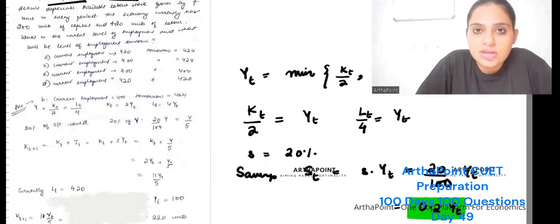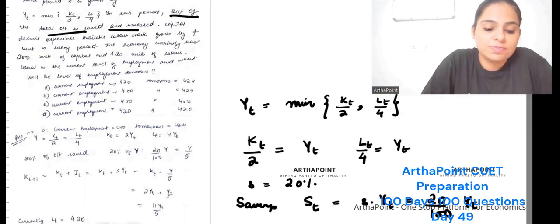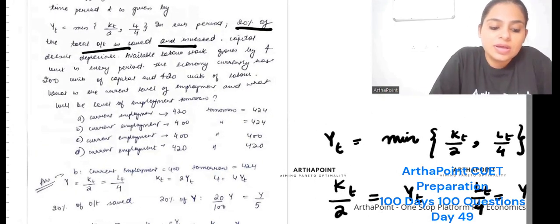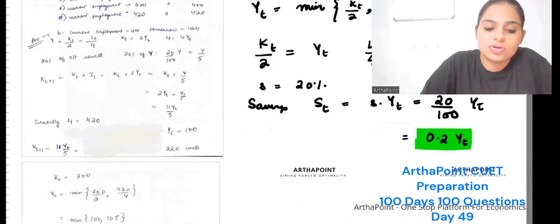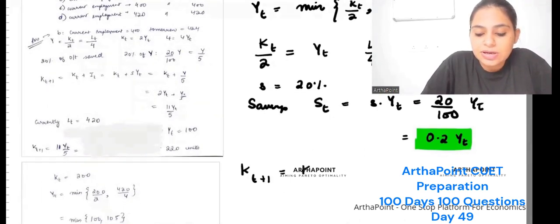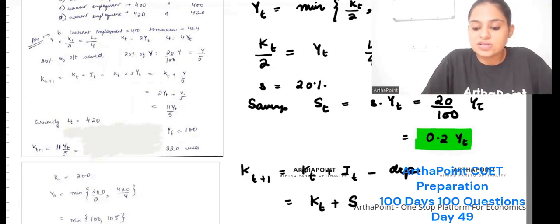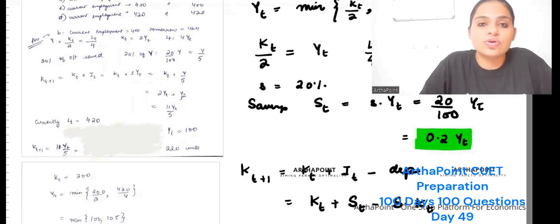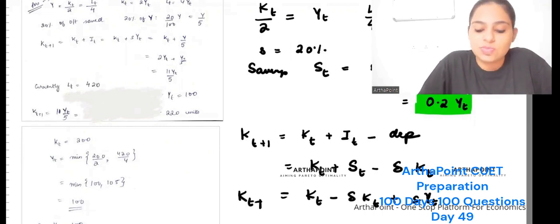Capital doesn't depreciate. In the Solo model, capital in period t+1 equals capital in period t plus investment minus depreciation. Investment equals savings, so K(t+1) = K_t + S_t minus depreciation, where depreciation is some proportion of capital.